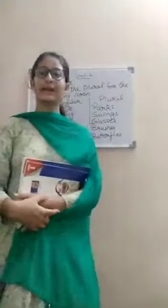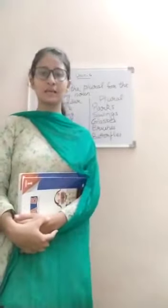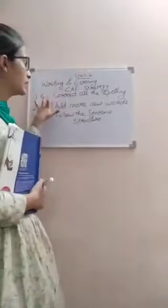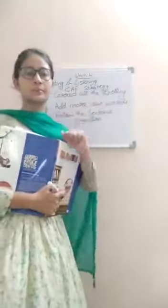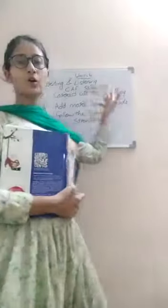Now with this we end the grammar section. Now we will start with the writing and speaking section. Today we are going to learn about the CAF strategy. I will write down what is CAF strategy on the whiteboard. CAF: C stands for Correct all the spellings. When you write a sentence, you should check that your spelling is correct.